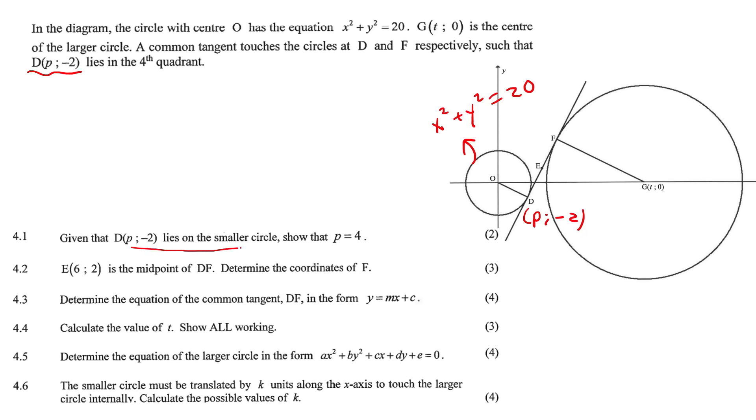Given that D lies on the smaller circle, show that P is 4. That's very easy. Because we have the circle's equation, we know P is the x, minus 2 is the y, so you're just going to fill that in into the circle's equation. And then you're going to end up with this being a positive 4, that's going to be 16. So technically P would be plus or minus 4 when you take the square root. But because it's in the fourth quadrant, x has to be positive, and so therefore P would have to be 4.